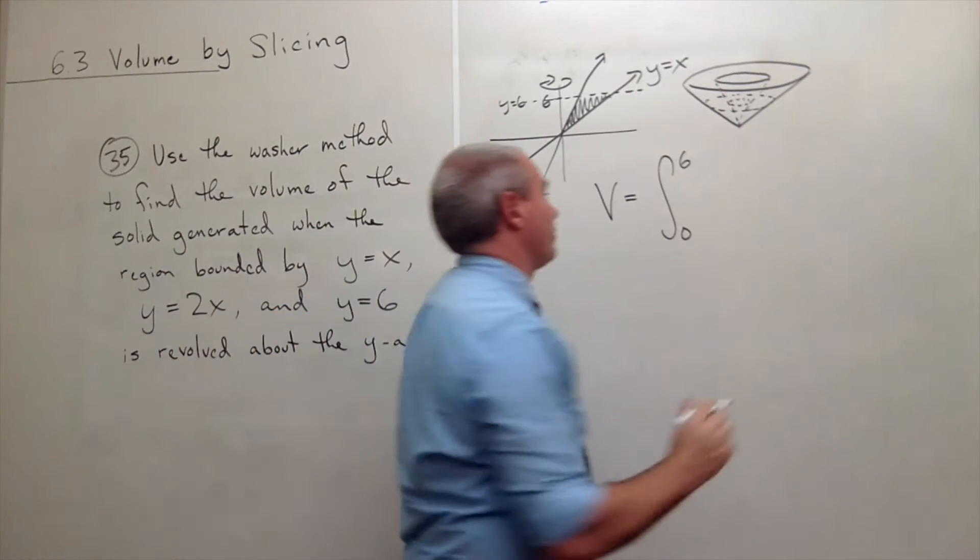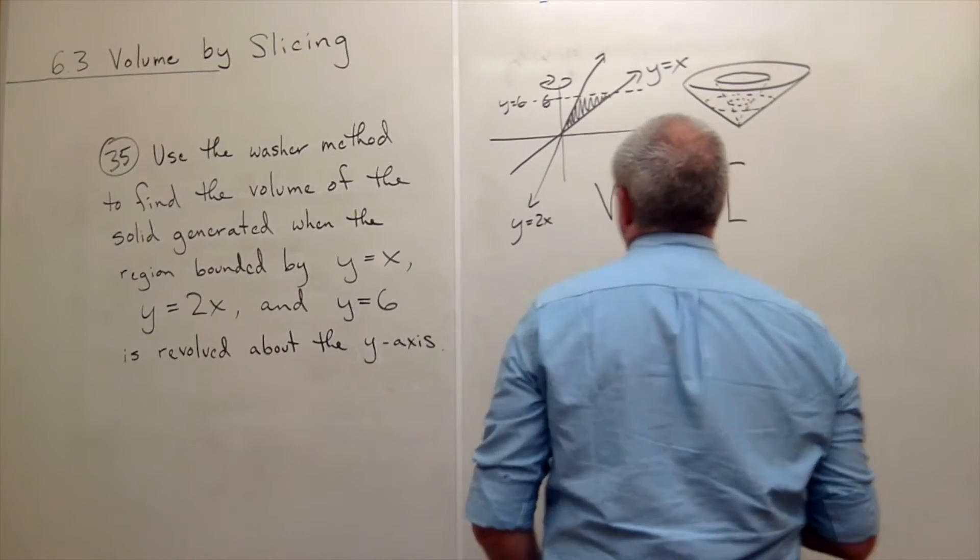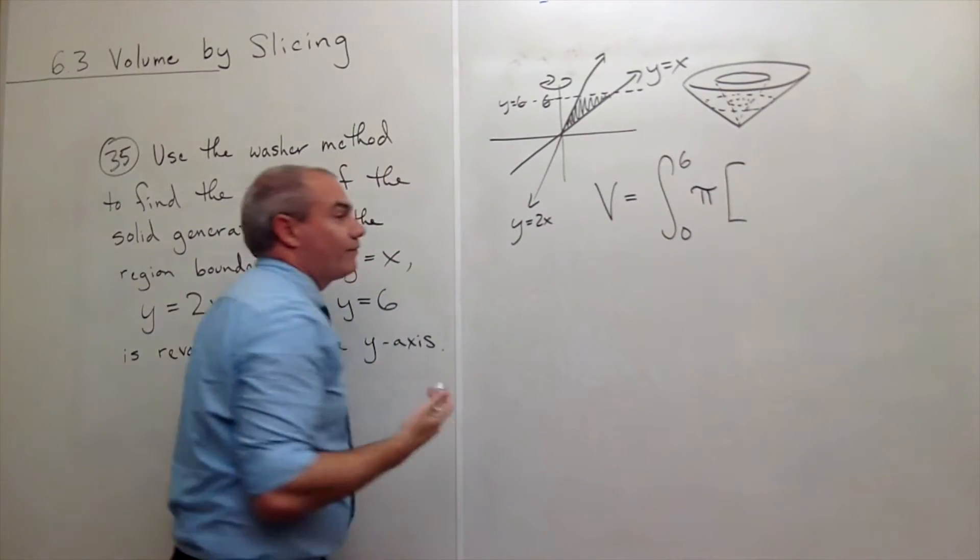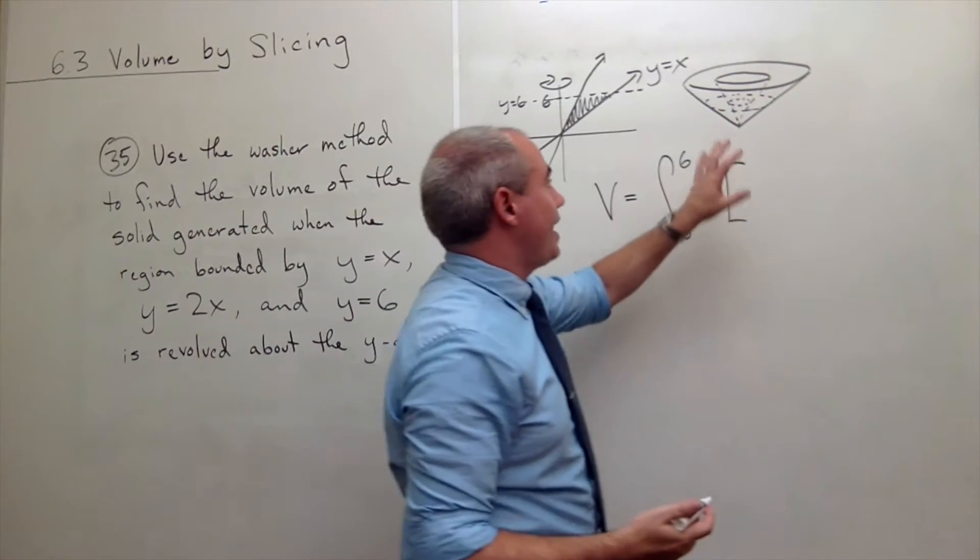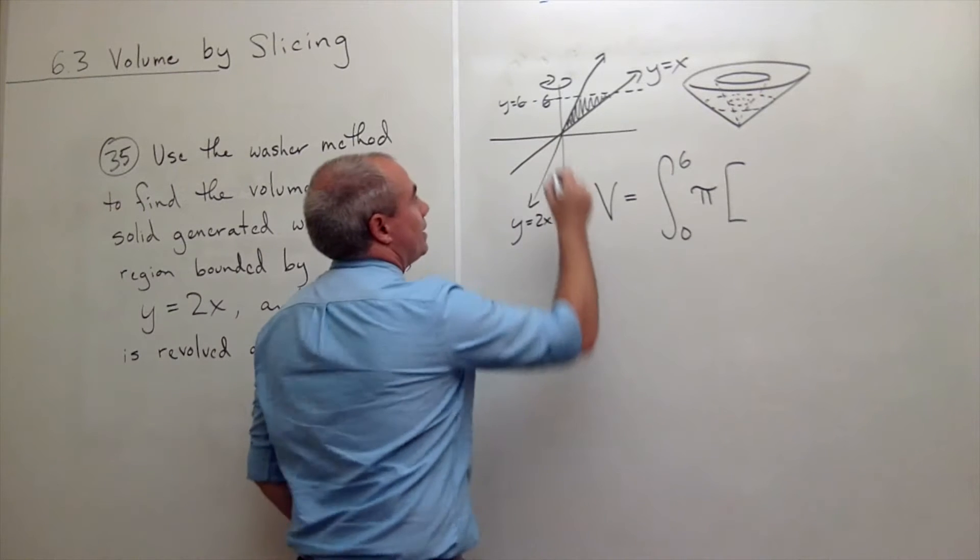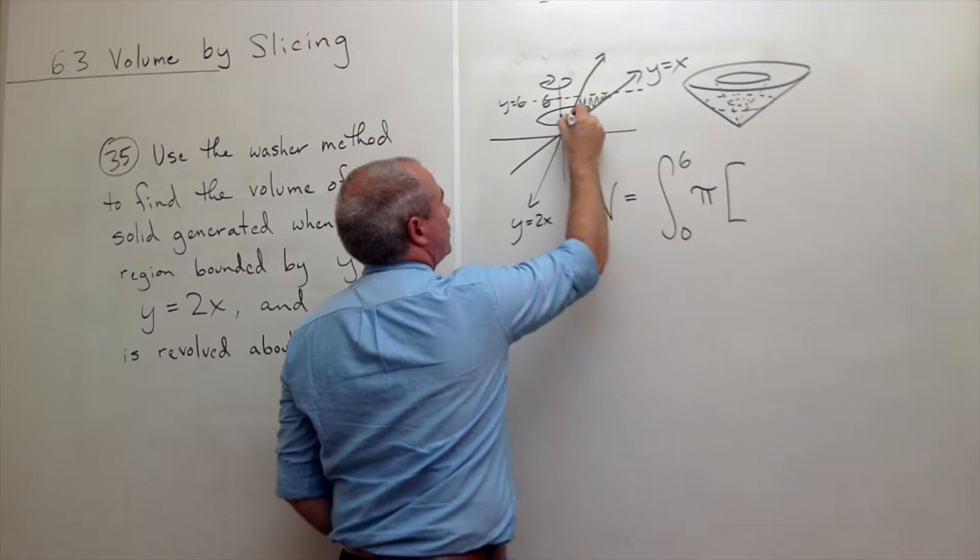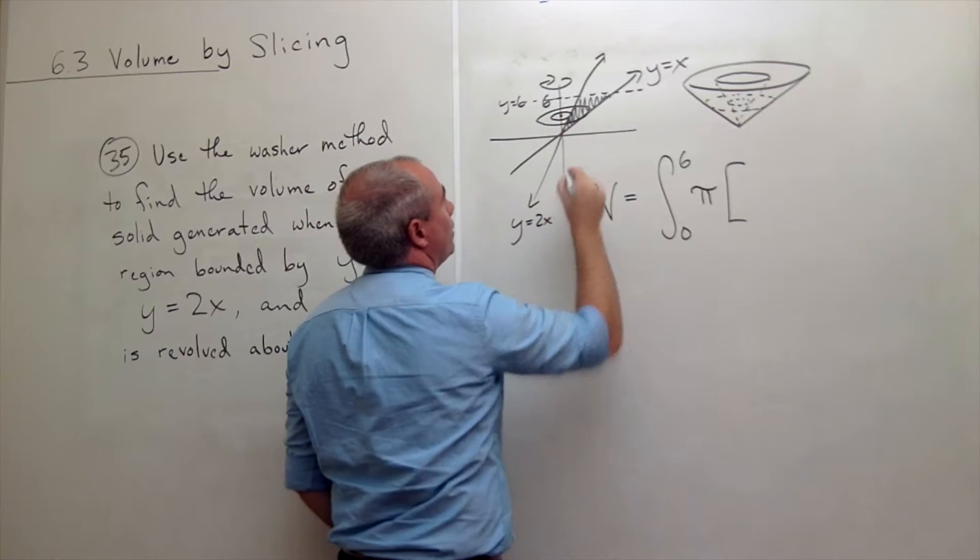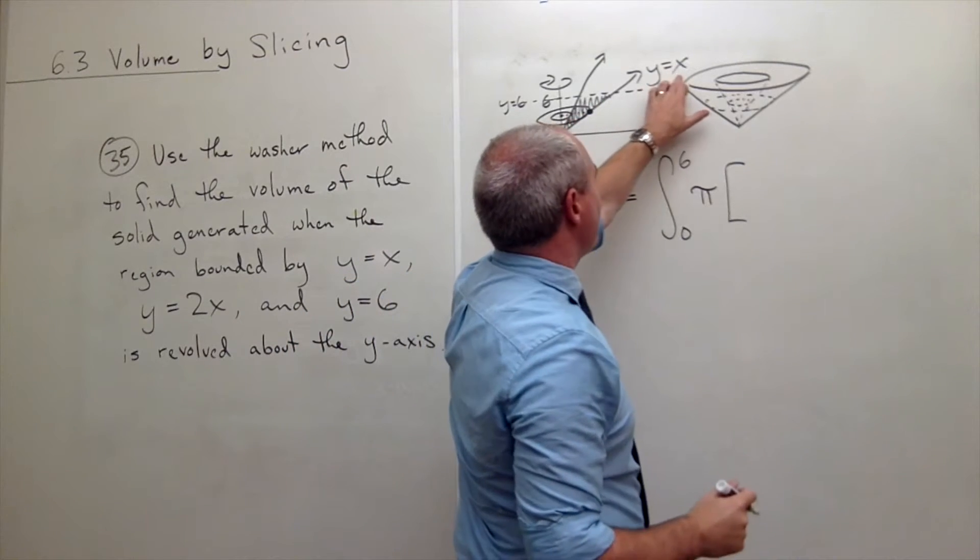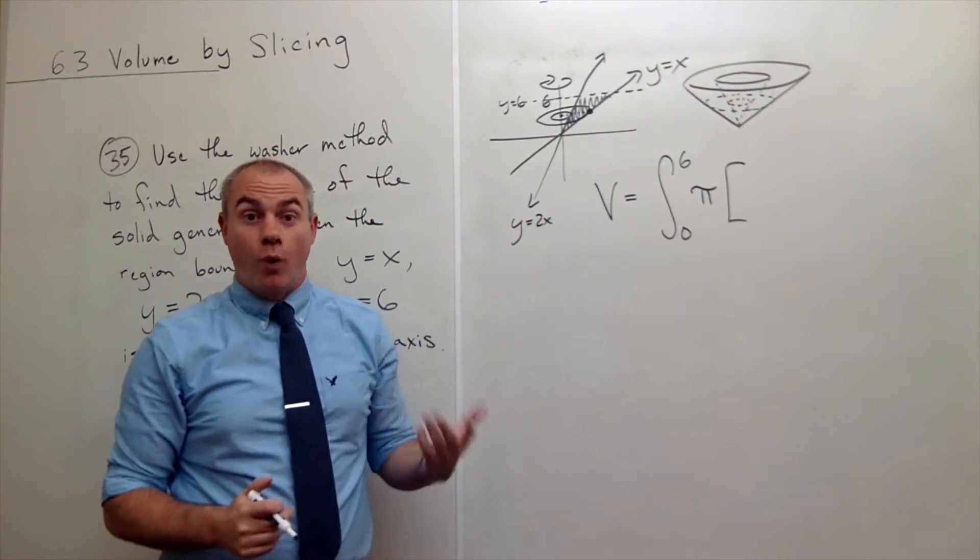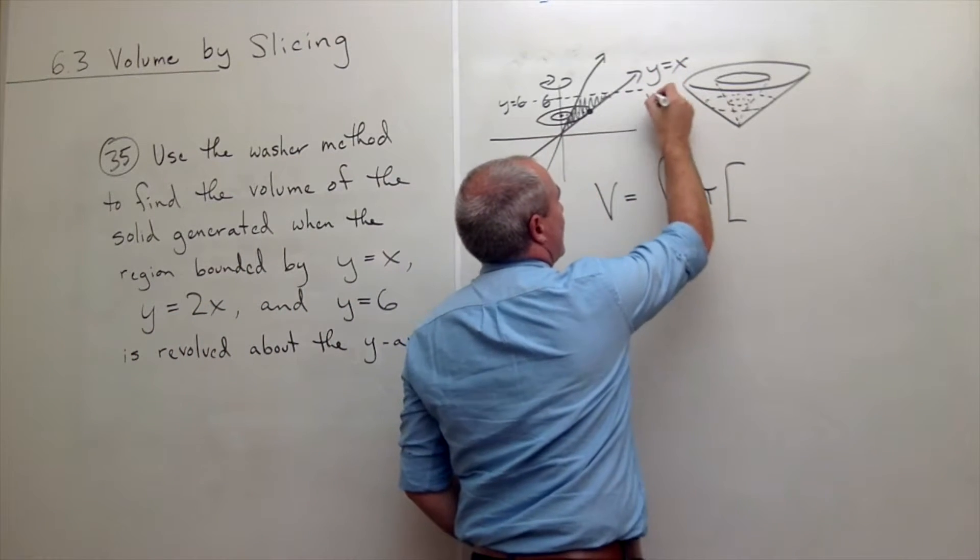So I'm integrating from 0 to 6 of, we now know this is pi times the outer radius squared minus the inner radius squared. So I'm going to put in my pi times the outer radius squared. And now this is where I have to be just a little bit careful because the outer radius, in this case, if I'm sitting here and I've got this washer right here, the outer radius is this function, but I don't want to write x.